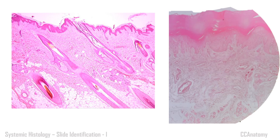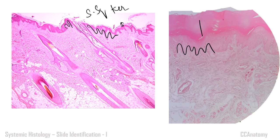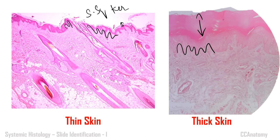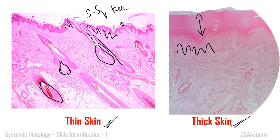Now identify this epithelium — the wavy pattern again indicates stratified squamous epithelium. Check if it is keratinized or non-keratinized. In one slide you can see a thin sheet of keratin on top — that is thin skin. In another slide you can see the same wavy pattern but with a thick layer of keratin — that is thick skin. Additional identification features: thin skin has hair follicles and sebaceous glands (sebaceous gland opening into the hair follicle). Thick skin has sweat glands with their ducts visible. Hair follicles and sebaceous glands are absent in thick skin. These features differentiate thin skin from thick skin.